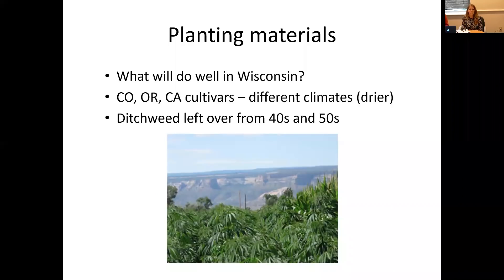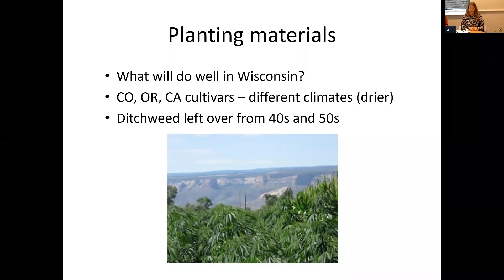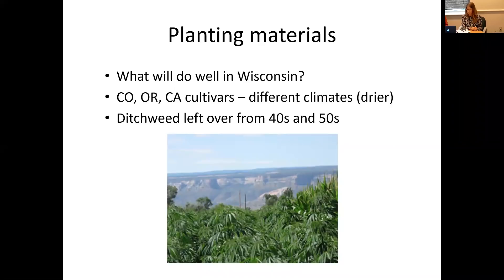Now you know a little basic anatomy and can tell the difference between males and females. We're going to talk about what will do well in Wisconsin. This is only the second year, and we're getting most of our cultivars and seed from places like Colorado, Oregon, and California, where they've been growing for a longer period of time — slightly different, drier climates than Wisconsin. It's going to be an exploratory year. You may see ditch weed or feral hemp growing across the state left over from the 1940s and 50s; more than likely it won't have a very high concentration of CBD since it was grown for fiber. You'll probably want to source materials from those other states.